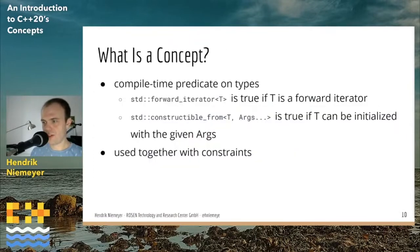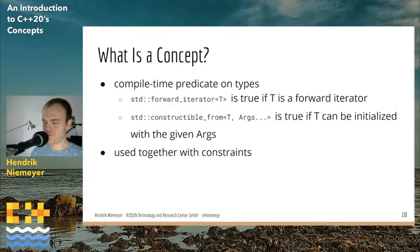Before we use concepts, we should talk about what they are. Concepts are compile-time predicates on types — functions that map types to a bool. Two examples from the standard library: std::forward_iterator<T> is true if T is a forward iterator, and std::constructible_from is true if T can be initialized with given arguments. These concepts can be used together with constraints to constrain templates to certain types, which we will now apply to our vector norm function.